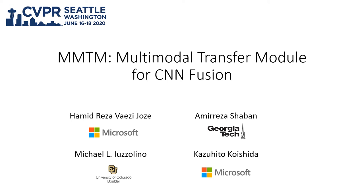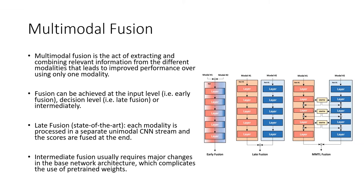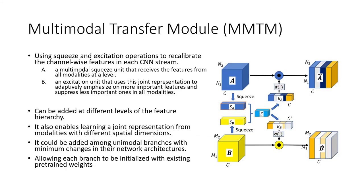MMTM, the multimodal transfer module for CNN fusion. Multimodal fusion is the act of combining information from different modality networks. We are presenting the multimodal transfer module, which is based on squeeze and excitation operations and can be added at different levels of the feature hierarchy.